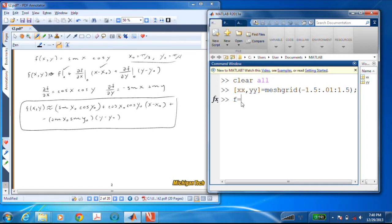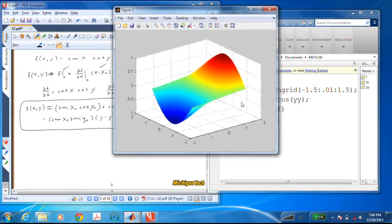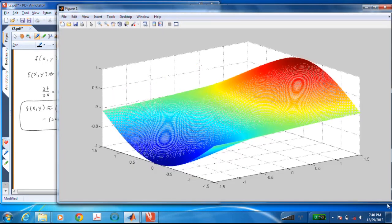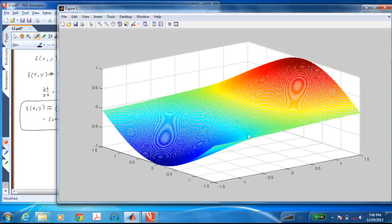And now I'll go ahead and make my function. So I'll say f, this is going to be the nonlinear version, is equal to sin(xx) .* cos(yy). And before we go ahead and look at the linear version, let's just plot that: mesh xx, yy, and f. There it is. What a beautiful looking thing. It has some interesting features to it.